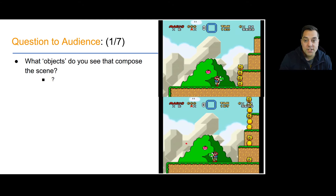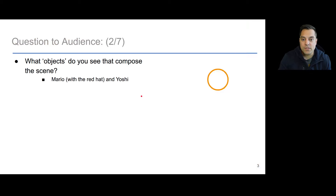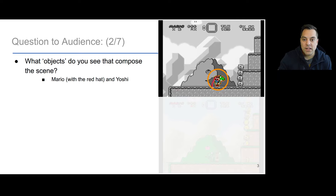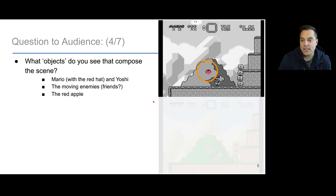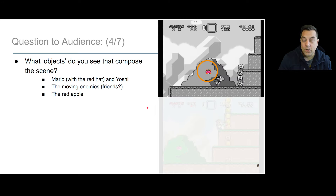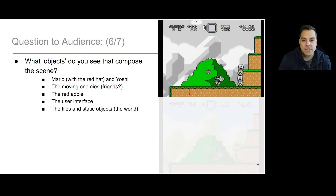Let's break this down a bit. I've got a still frame on the top and the animation at the bottom. The different objects that compose this scene include Mario with his red cap riding on Yoshi, the dinosaur-lizard character. There are moving enemies, the little red apple you might have seen shaking around, the user interface, the tiles you're walking on, and maybe even the bush in the background layer.